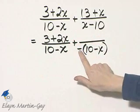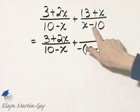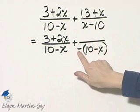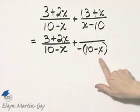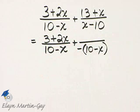Now watch, I haven't changed anything. Negative times 10, that's negative 10, which is what I have, and a negative times a negative is positive, so that's positive x, and that's what I have.